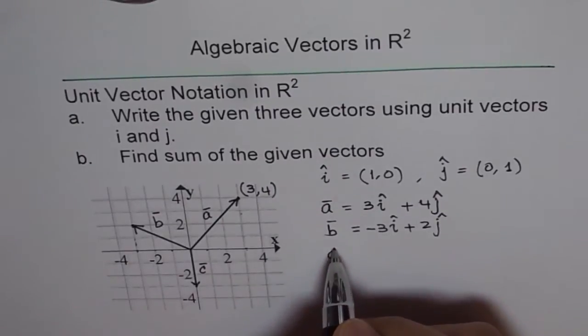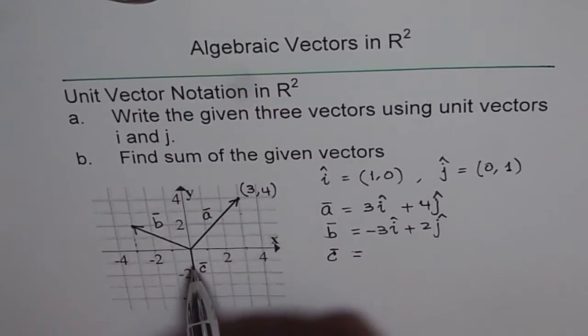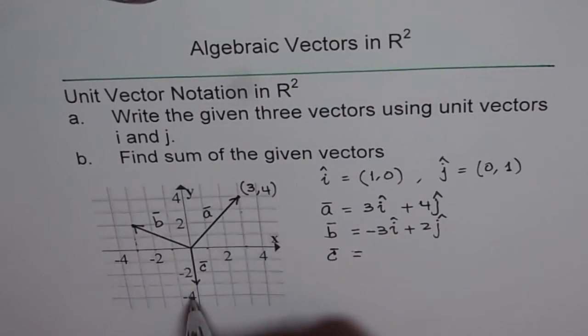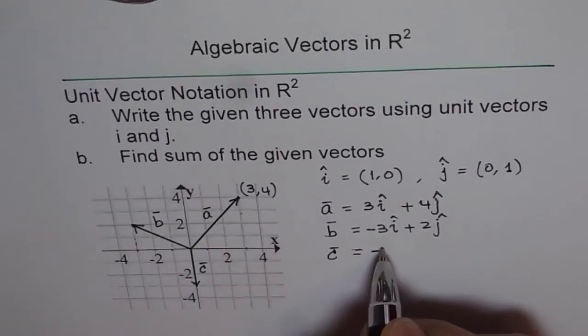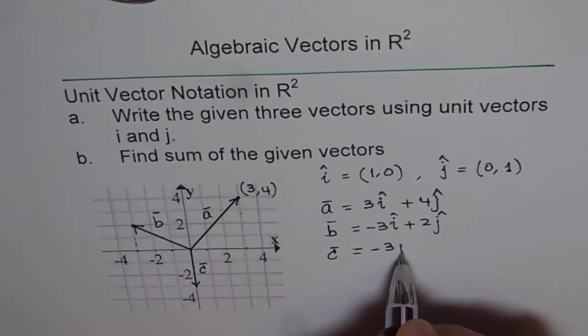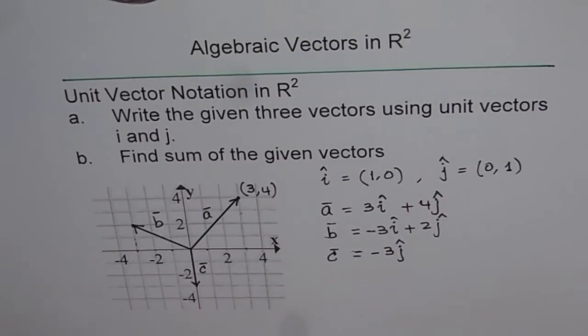And similarly, we can write what C is. Now C is along negative y direction and the units are 3 units. So we can write this as minus 3j. So minus 3j represents C.